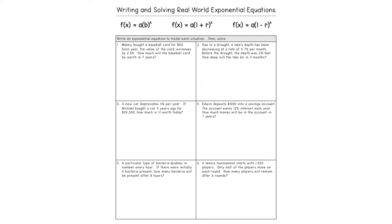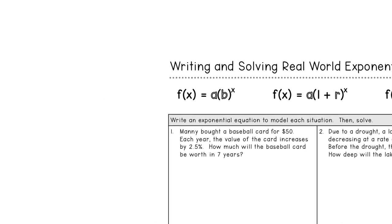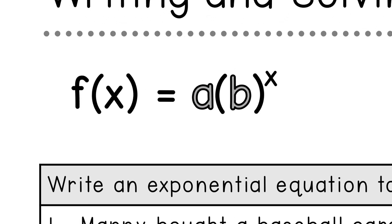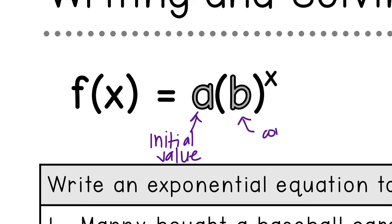Good afternoon. Yesterday you guys learned about writing equations from word problems, and today we're going to do six practice problems. Just a reminder that the normal equation for exponentials is f of x equals a times b to the x power, where a is your initial value and b is your common ratio.